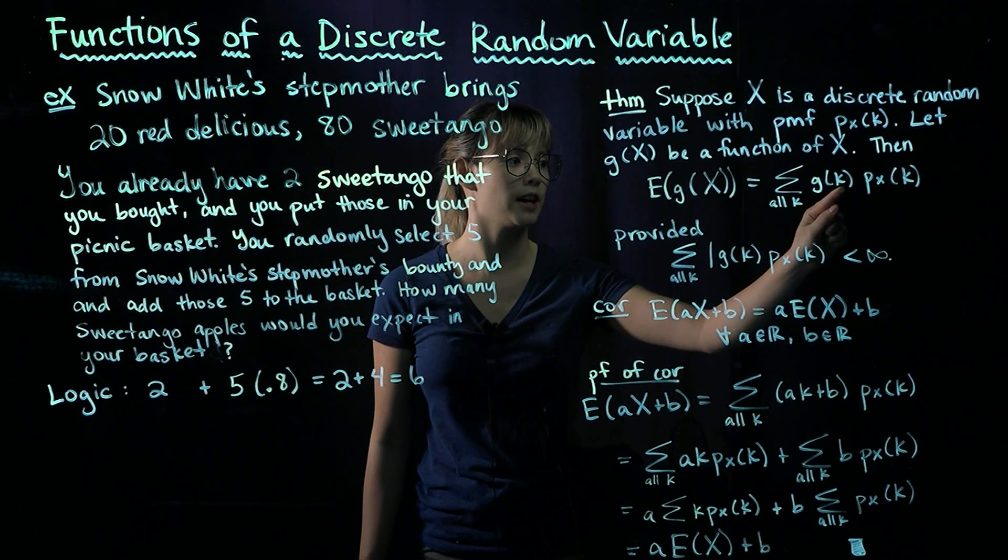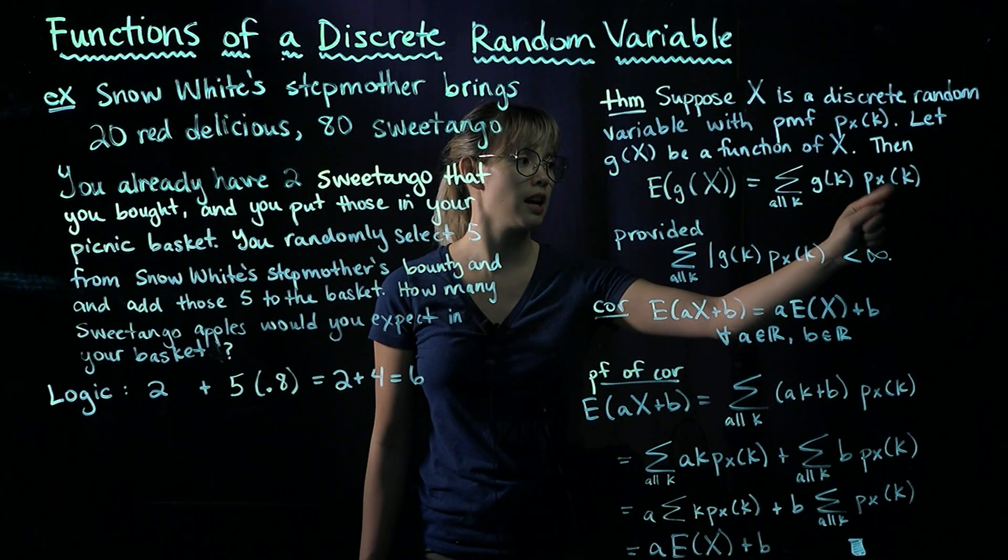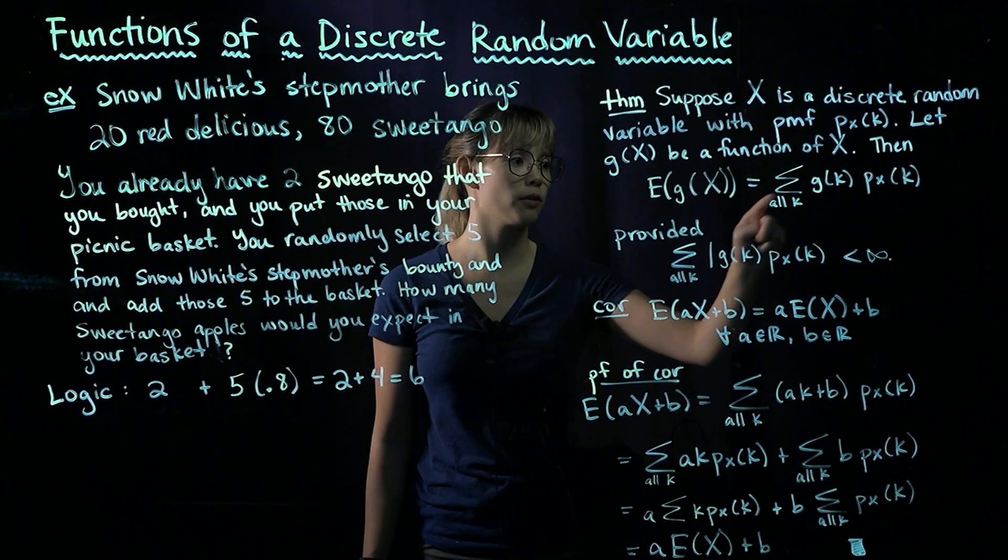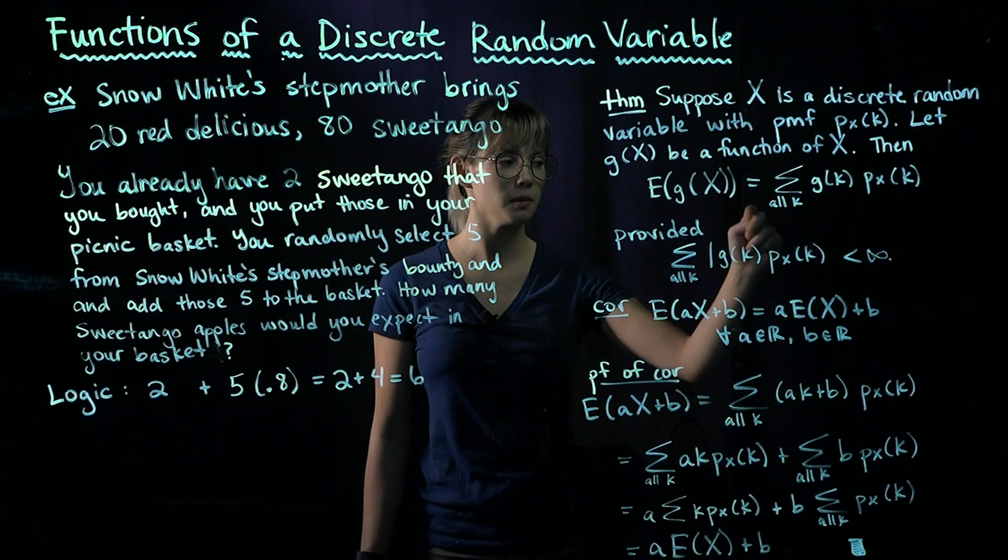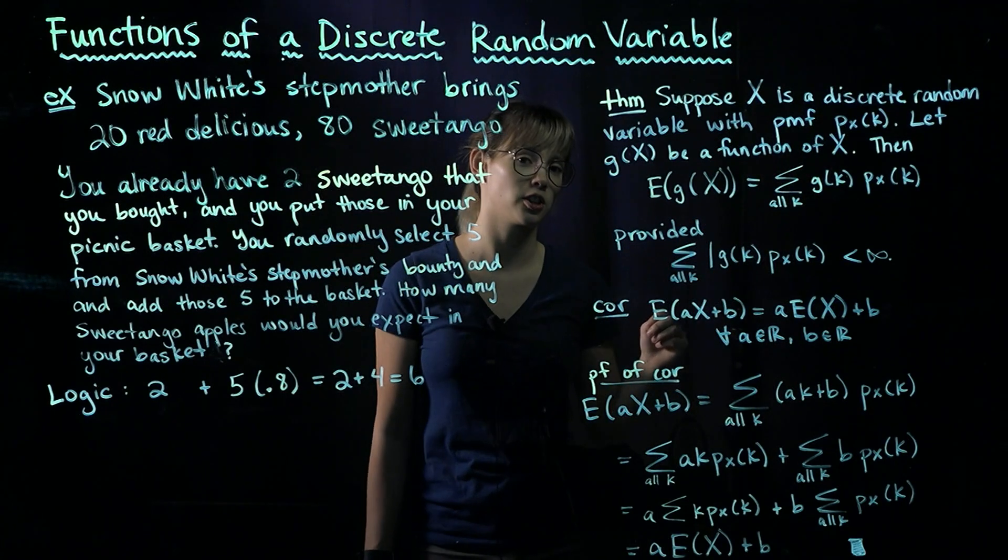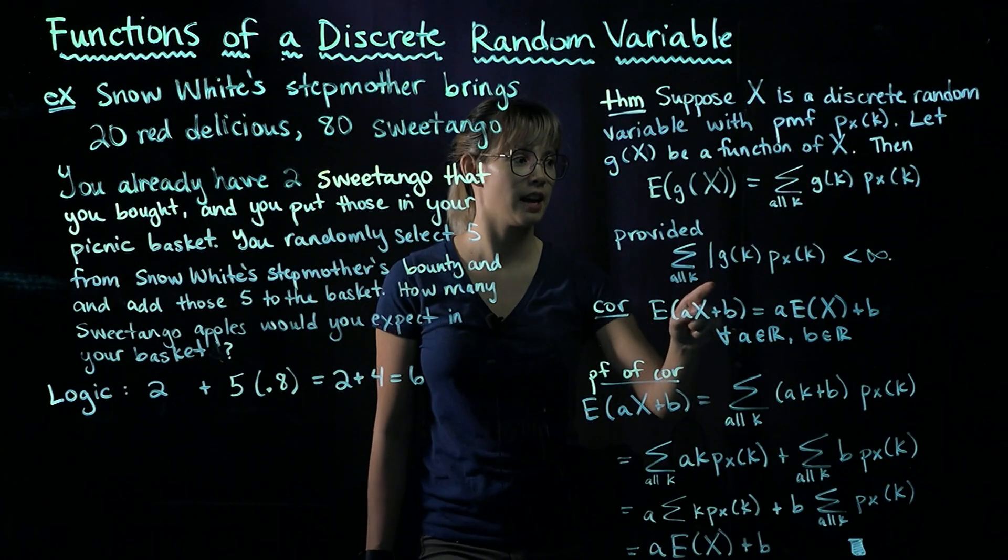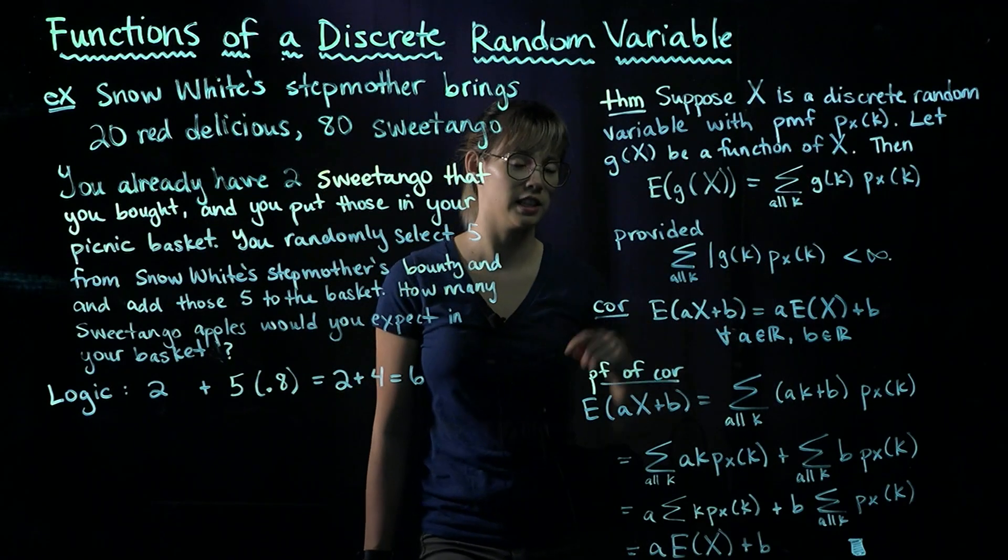We can calculate that by taking each value of k—each value that X can take on—plug that value into both our function and into our PMF, take the product of them, and add them over all the values of k. So we're taking the expected value of our function of X, and this will be true as long as this sum here is finite.